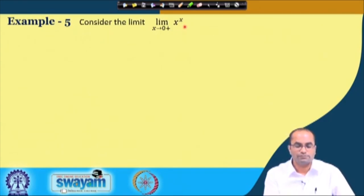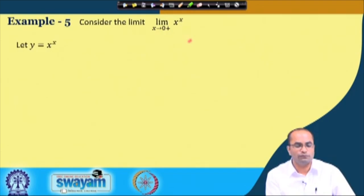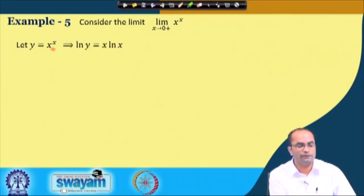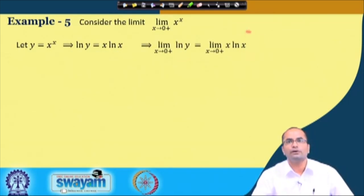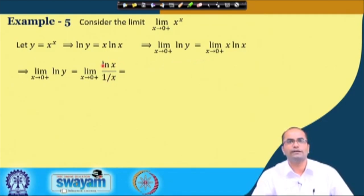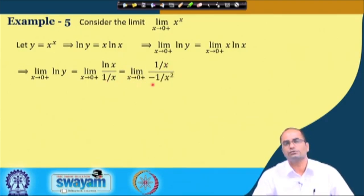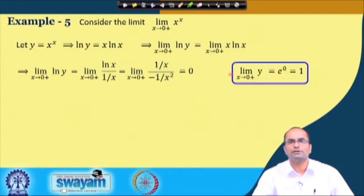Example: the limit as x→0 of x^x (a 0⁰ form). Set y = x^x, so ln(y) = x·ln(x). This is a 0×∞ form. Write it as ln(x)/(1/x) — infinity/infinity. Applying L'Hôpital's rule: derivative of ln(x) is 1/x and derivative of 1/x is −1/x², giving −x → 0. Therefore the limit of x^x = e⁰ = 1.